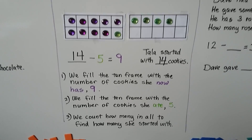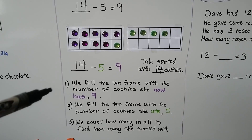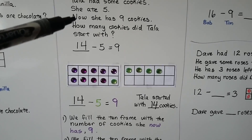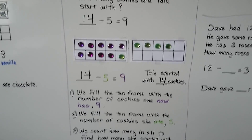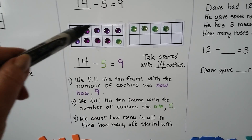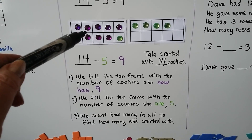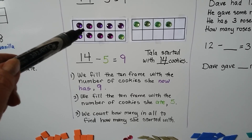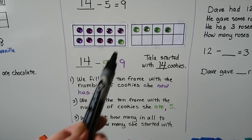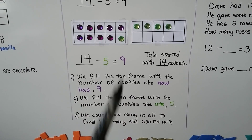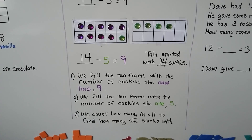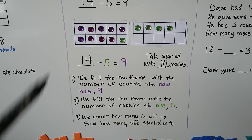We fill the 10 frame with the number of cookies she now has — it says she has 9 cookies. So we put 9 markers. We fill the 10 frame with the number of cookies she ate — she ate 5. And we count how many in all to find how many she started with. She started with 14.